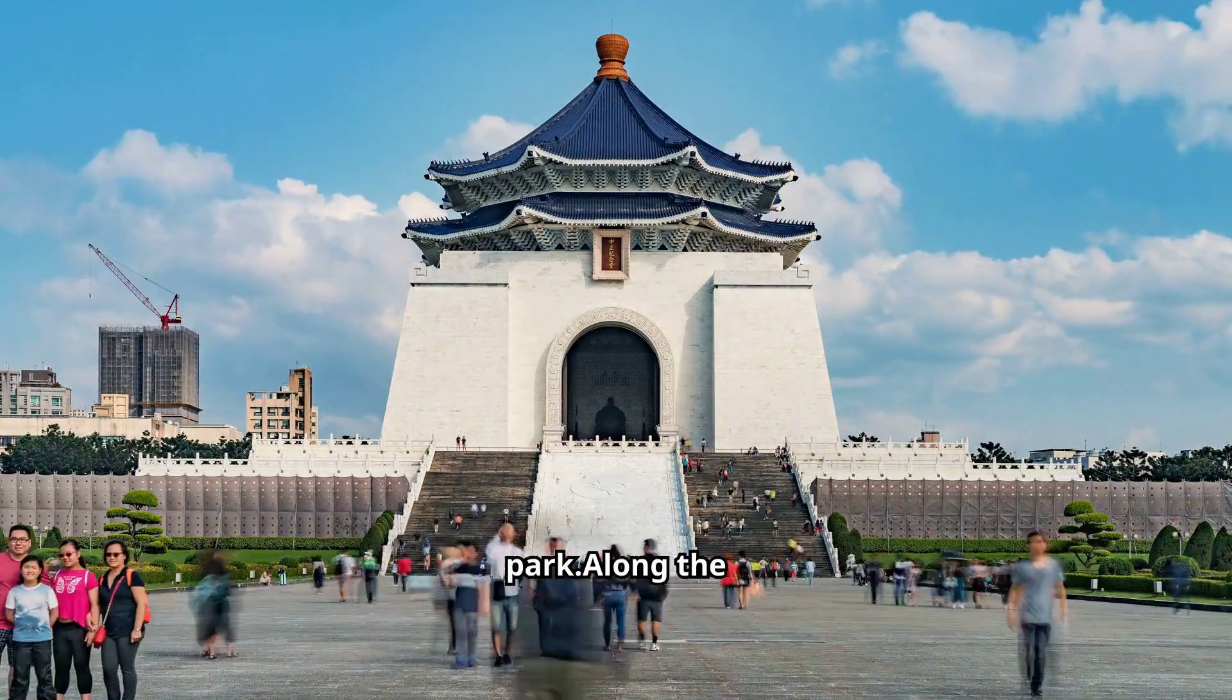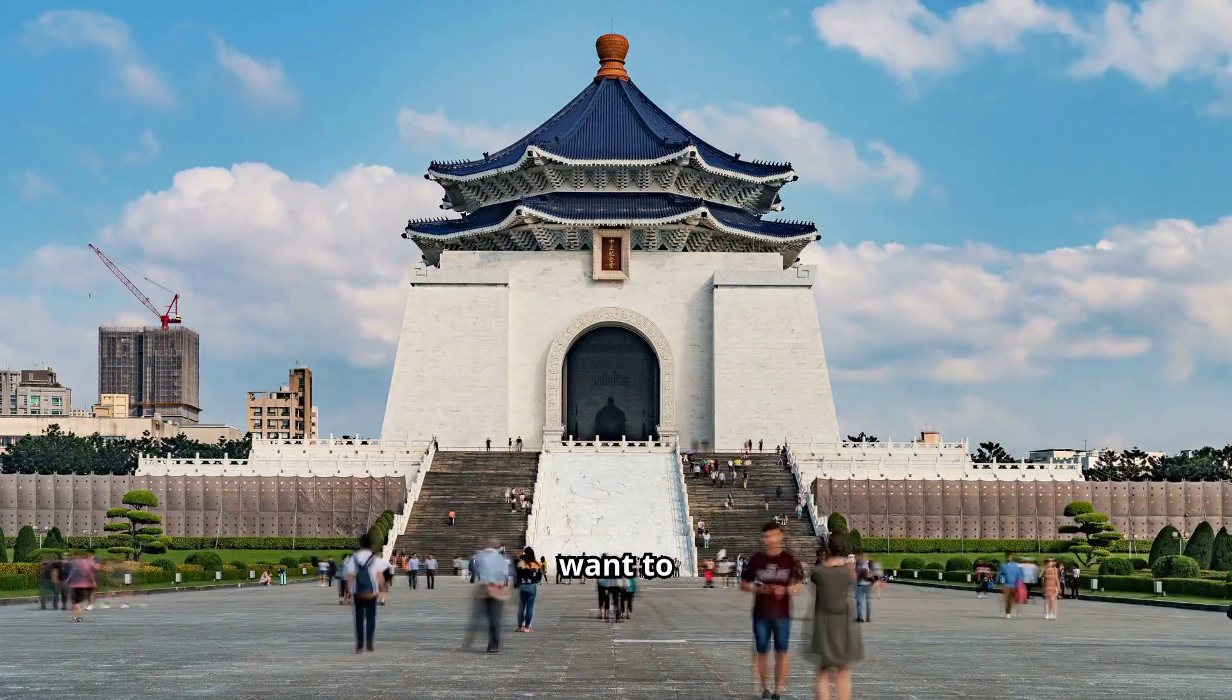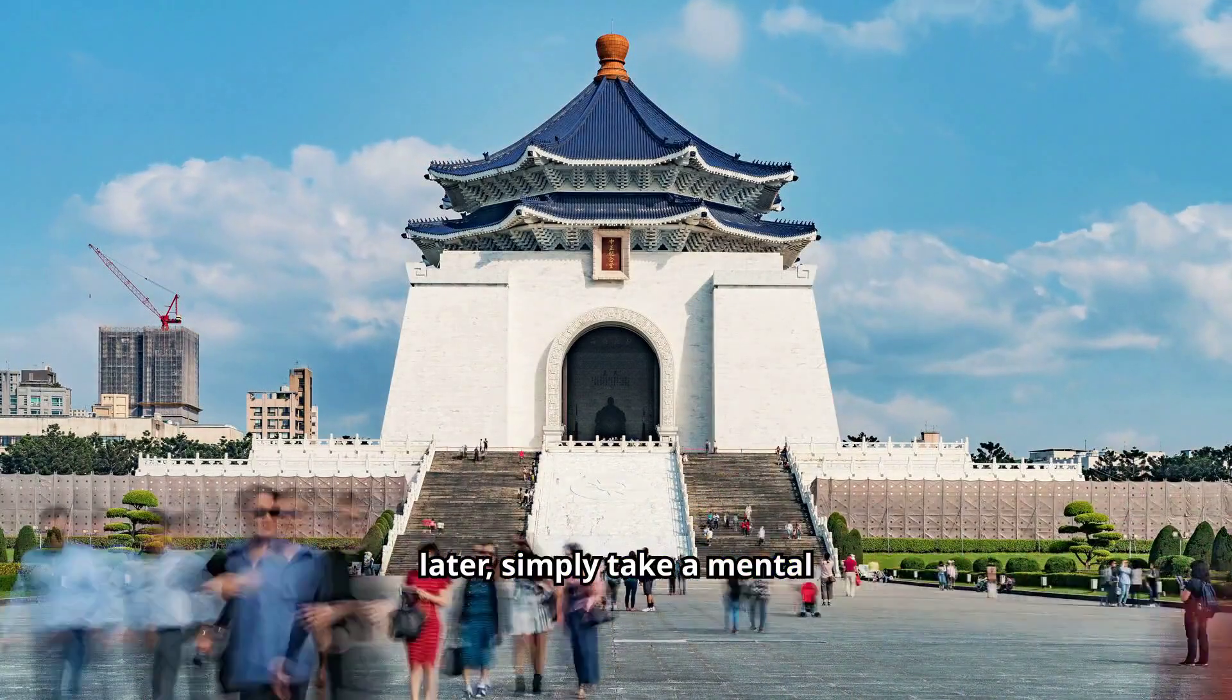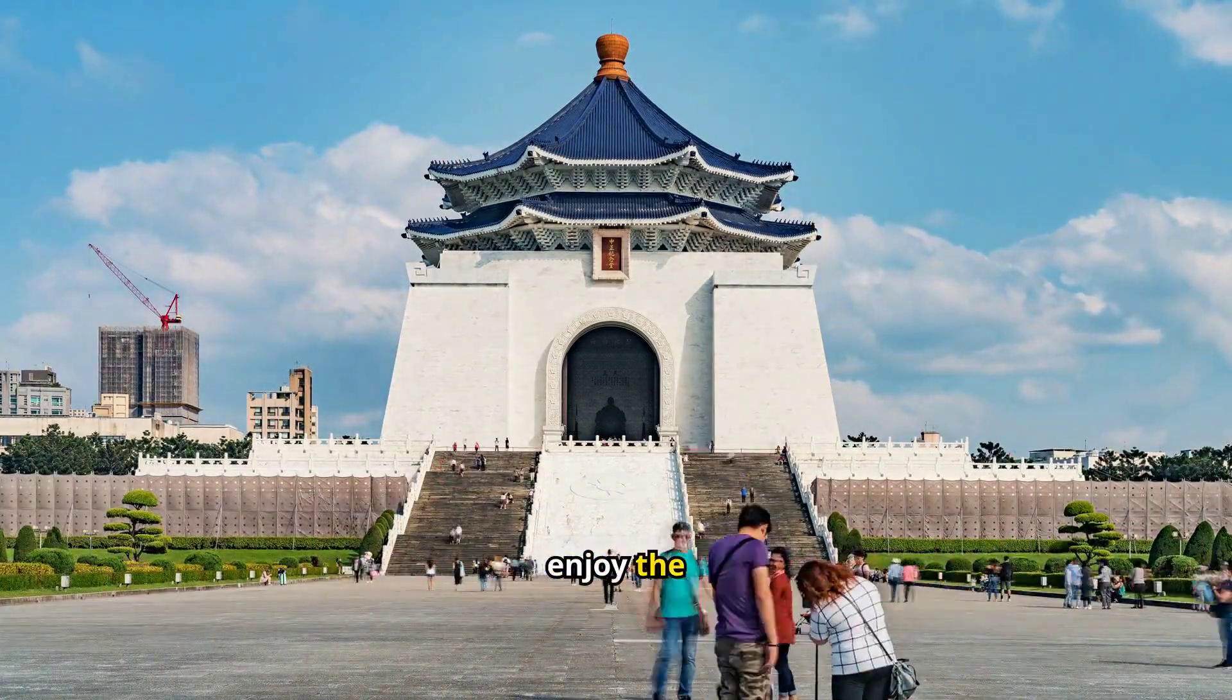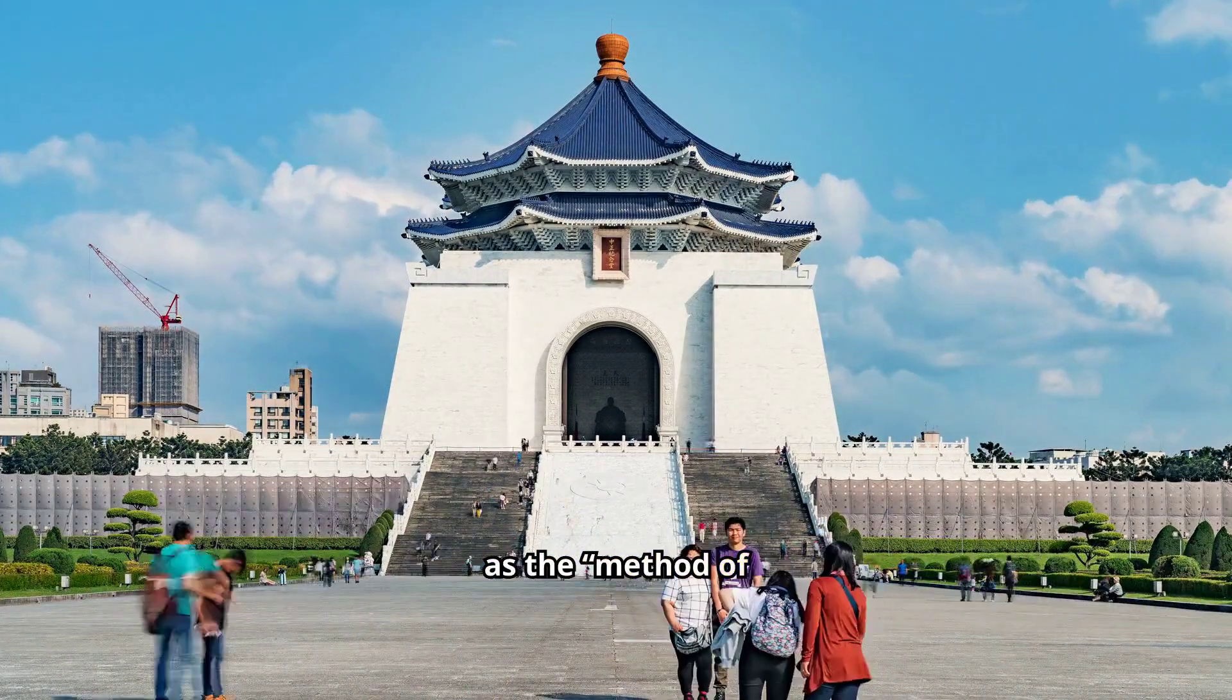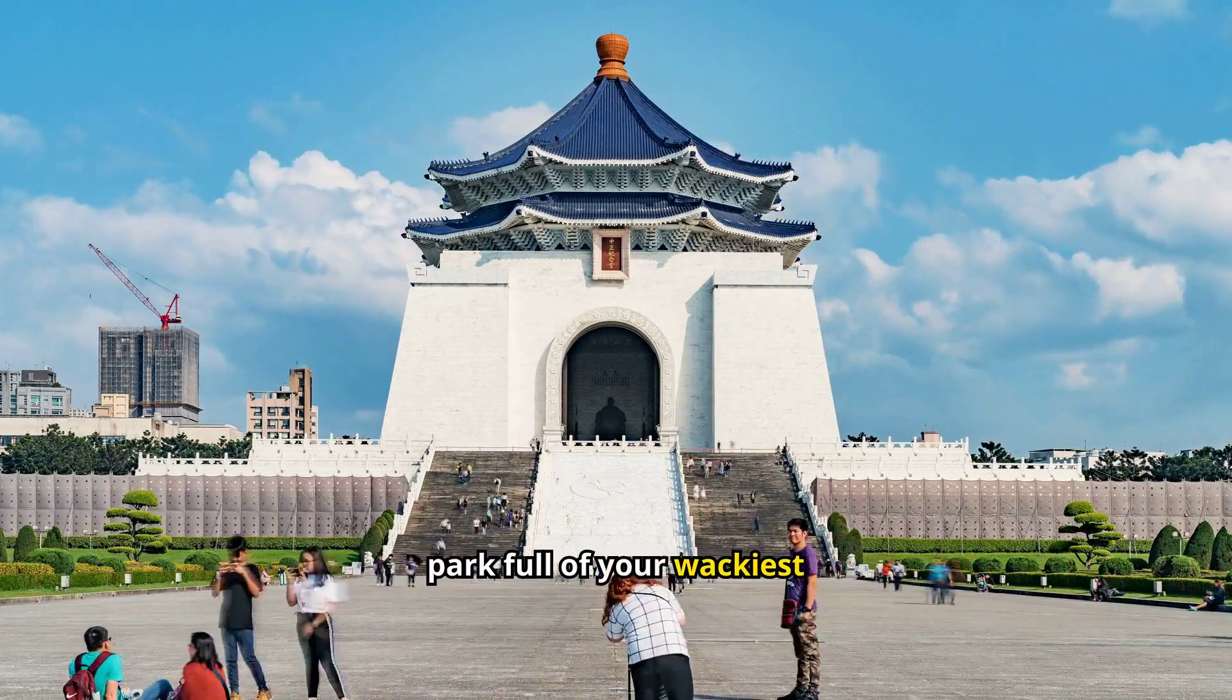Along the way, mentally place exaggerated, silly images that represent what you want to remember. To recall the info later, simply take a mental walk through your palace and enjoy the show. This is also known as the method of loci, but think of it as a mental theme park full of your wackiest thoughts.